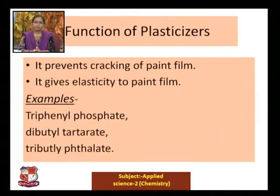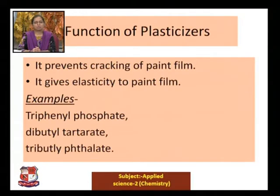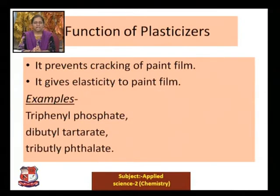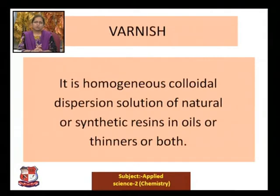Coming to plasticizers — as the name itself suggests, plasticizers give elasticity to the paint film. Examples of plasticizers added to the paint are triphenyl phosphate, dibutyl tartrate, and tributyl phthalate. These are all examples of plasticizers that are added to the paint.